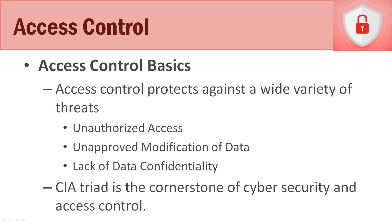We want to protect ourselves against a wide variety of threats. We want to prevent unauthorized access to our data, our assets, our information. We want to prevent unapproved modification of our data, and we want to prevent a lack of data confidentiality. You'll notice that this relates back to the CIA triad — unauthorized access gets back to confidentiality and availability, and it needs to be available and secure to only those who should have access.